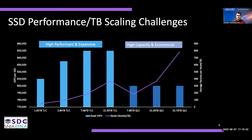Another important factor is that when looking at a high-density storage solution with TLC, the cost becomes very expensive. To mitigate this, an alternate route is using QLC, but performance drops to a significantly lower level. So how do we balance high performance with an expensive solution versus high capacity with an economical solution?